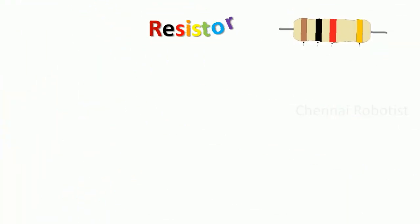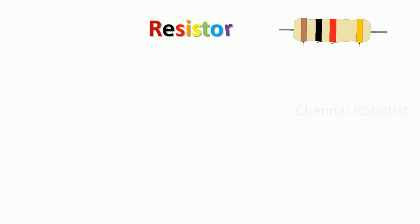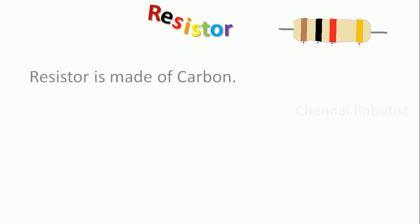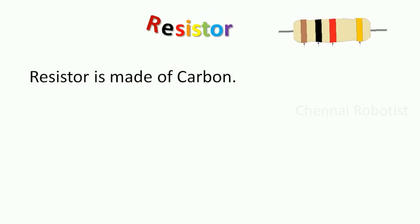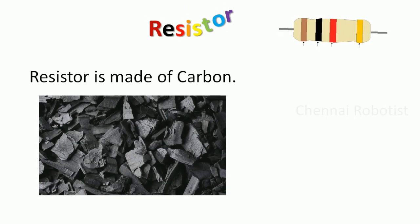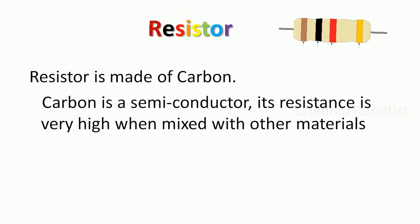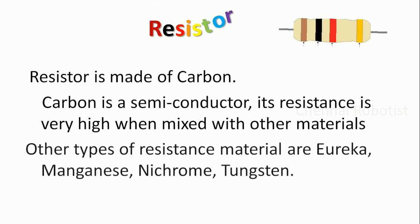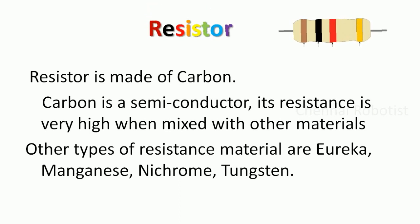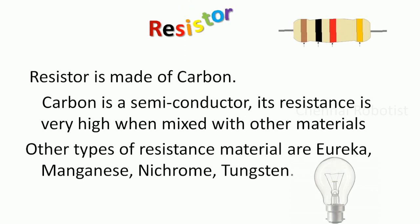Here is our dancing resistor! A resistor is made up of carbon basically. A fixed resistor that we use very commonly is made up of carbon. Carbon is a semiconductor — its resistance is very high when mixed with other materials. Other types of resistance materials, other than carbon, are Eureka, manganese, nichrome, and tungsten. Tungsten, as we know, is used in our bulbs.